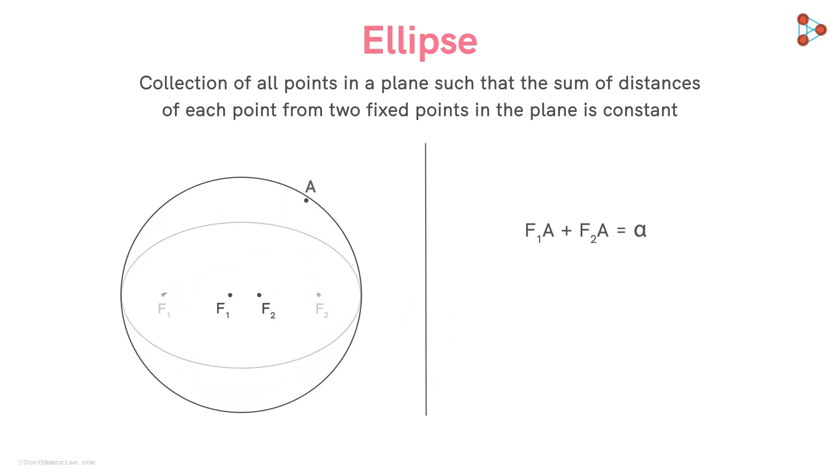We get a circle. All the points will be at a distance of alpha over 2 from the center where the two foci coincide. So we see that a circle is a special case of an ellipse when the two foci of ellipse coincide.